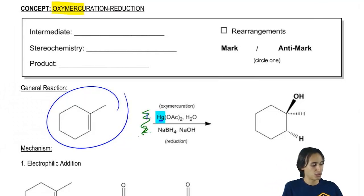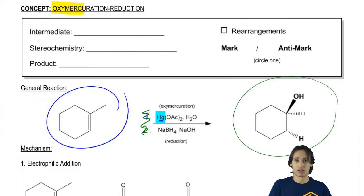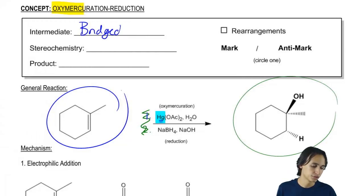Regardless, look what happens. We still get an alcohol. So let's go ahead and look at the general feature of this mechanism. So basically the intermediate for oxymerc is not going to be the same as hydration. Instead of being a carbocation, what it's going to be is what we call a bridged ion. And that's going to be a big deal when it comes to predicting products. That's actually going to matter a lot.